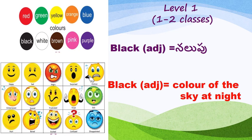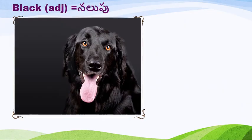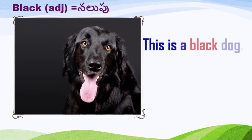At night time, how is the sky? The sky is black. Black means nalupu — nalupu. It's an adjective. What do you see in this picture? Oh, it's a dog! What is the color of this dog? Black. This is a black dog.